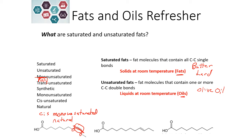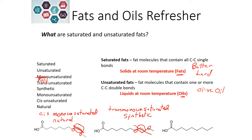If we look at the next formula, again we have one double bond in our carbon chain, so this is monounsaturated. Looking at where the carbons are in the double bond, they are on opposite sides, so this is a trans monounsaturated fat. Because it's trans, this happens when we hydrogenate oils — when we add hydrogen in to try and affect their properties — making this a synthetic fatty acid.